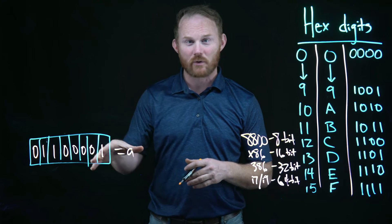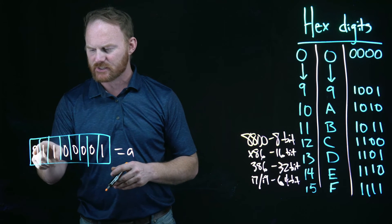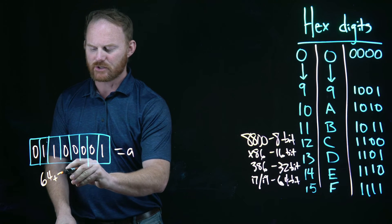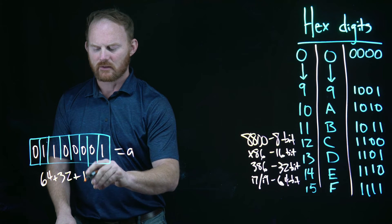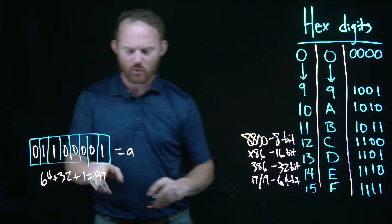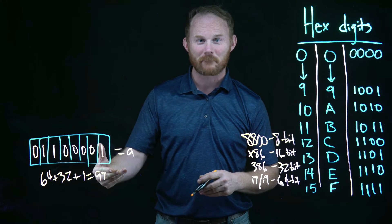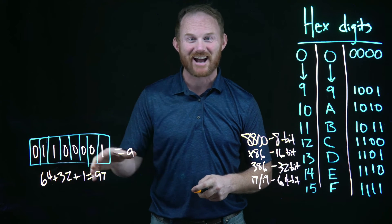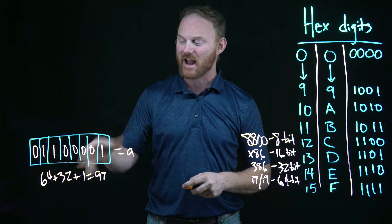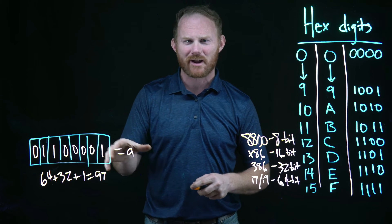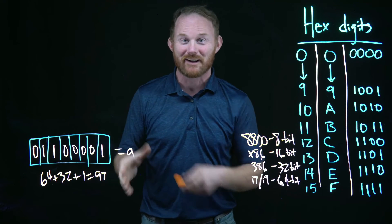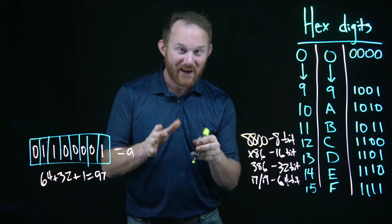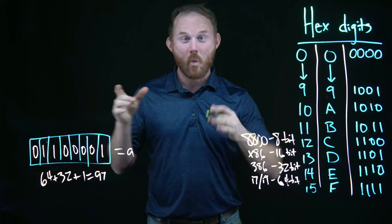If we total this up: the 64 place plus the 32 place plus 1 equals 97. So in decimal, that binary number is 97. But that's really ugly — I don't want to look at that and try to remember how many zeros there are before I get back to a one. Computers are great at that, but we can do one better here.